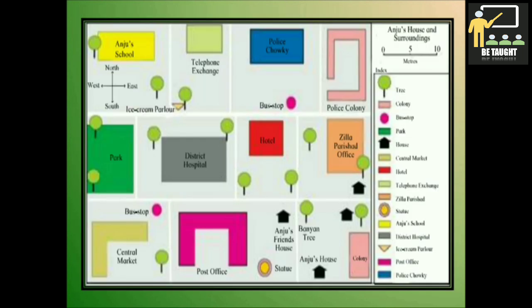A smaller picture of Anju's house and locality — that is, the area around Anju's house — is given in this picture. However, realistic pictures of trees and buildings are not shown in it. In their place, certain symbols are drawn. What these symbols represent is also mentioned against each of them. You can see over here they have shown the tree, the house, the bus stop. Such a picture is called a sketch.